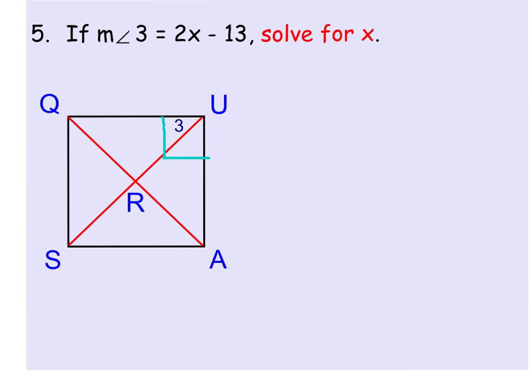So if I take 90 and divide by 2, I know that angle 3 has to equal 45 degrees. And if I know that angle 3 has to equal 45 degrees, then I can set 2x minus 13 equal to 45, and then go ahead and solve for x.